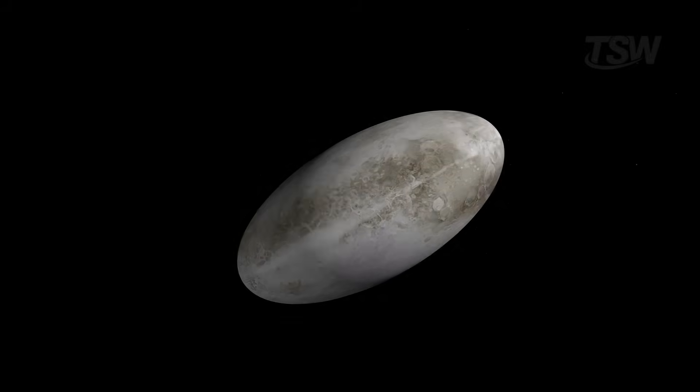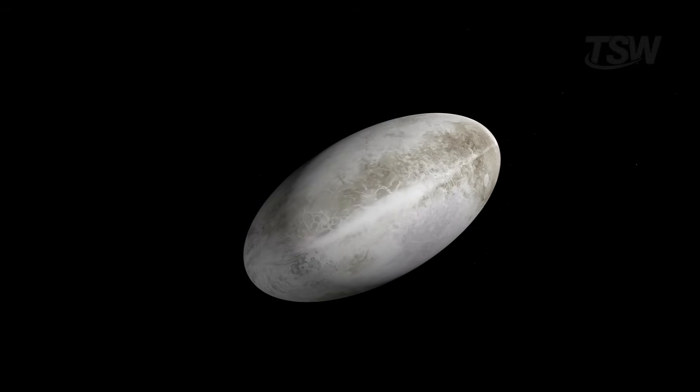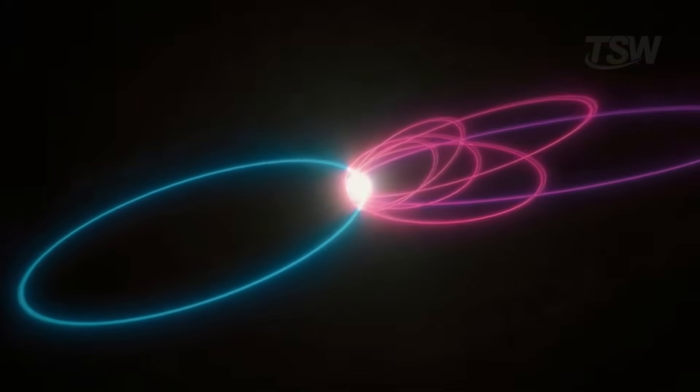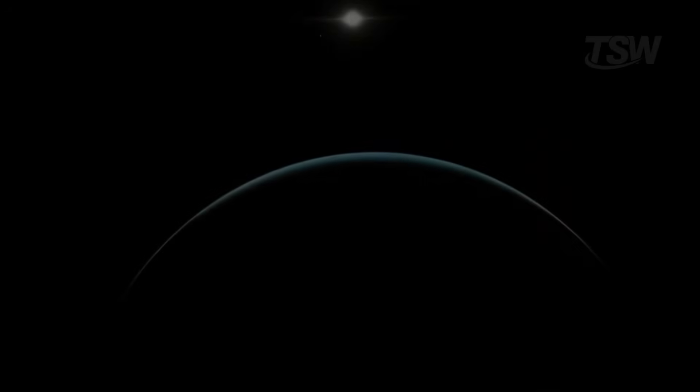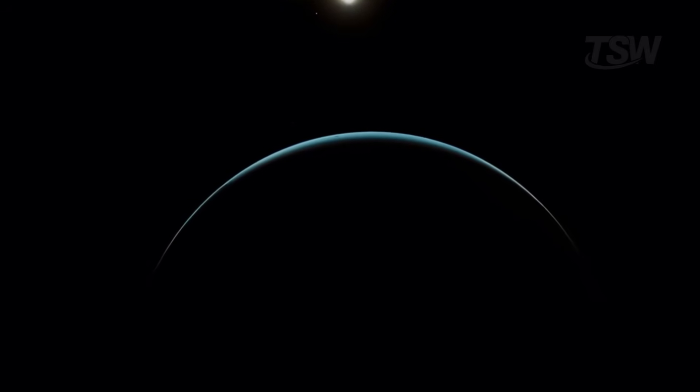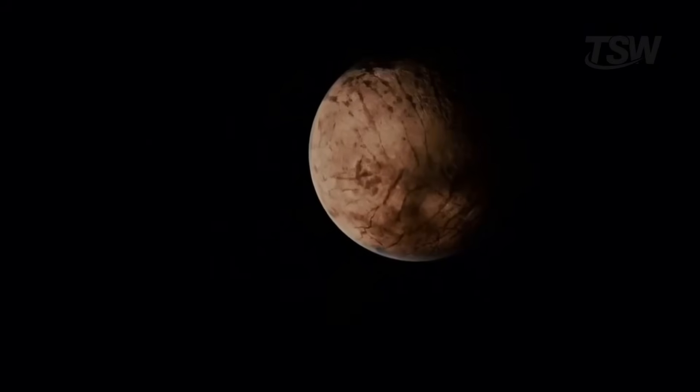Each new object, each tiny moon, each strange orbit is another piece of the cosmic puzzle. These are clues that help us reconstruct the history of the Sun and the planets, understanding how they migrated, how their compositions changed, and how the solar system transformed over billions of years.